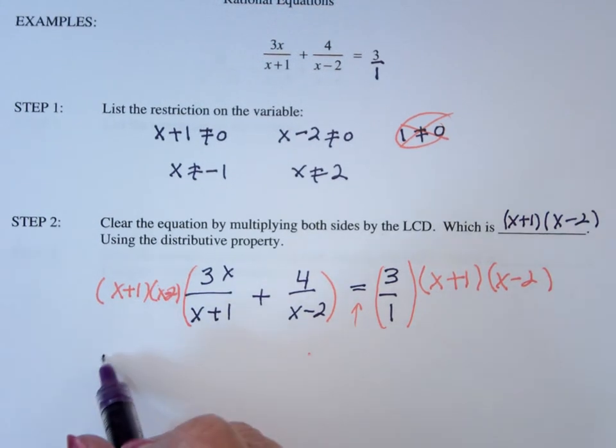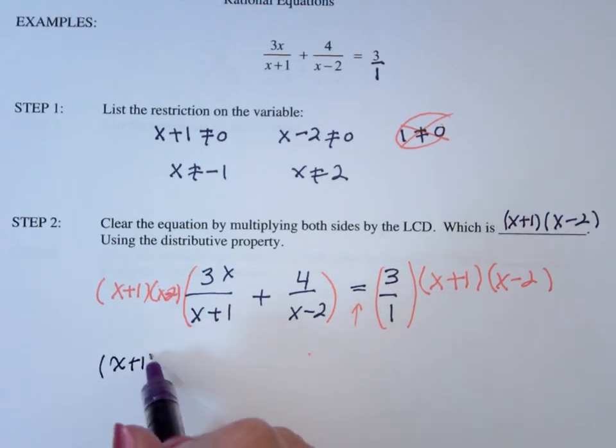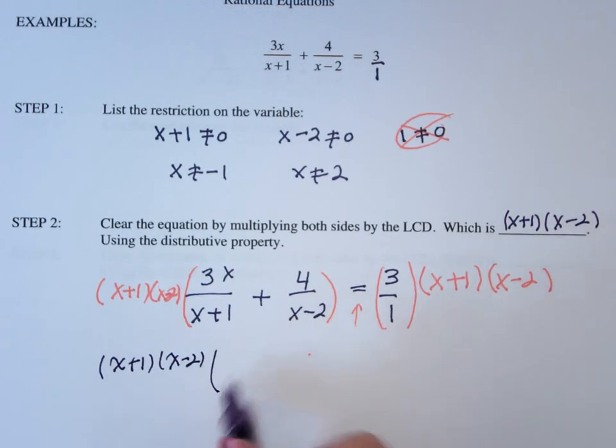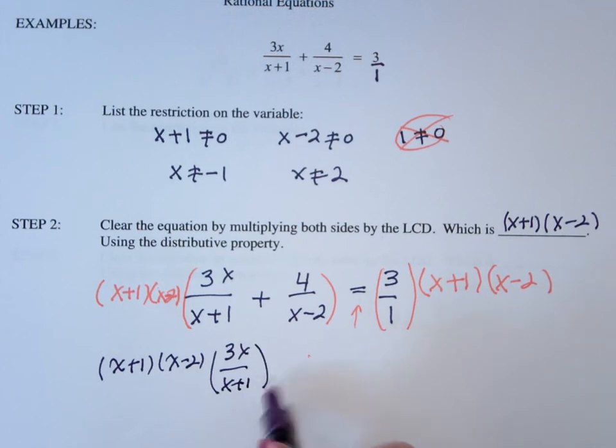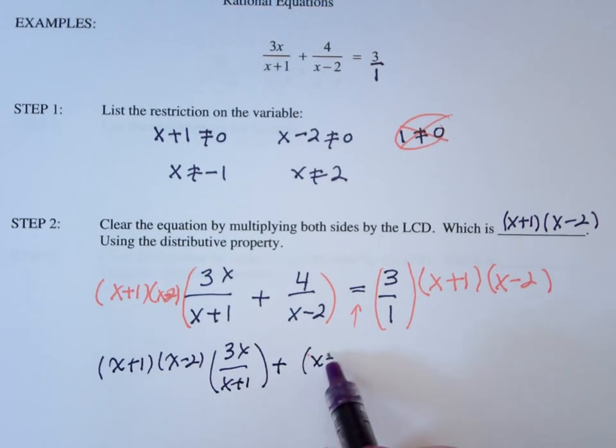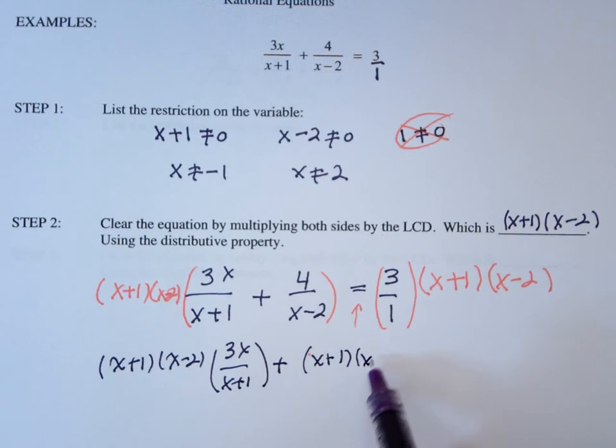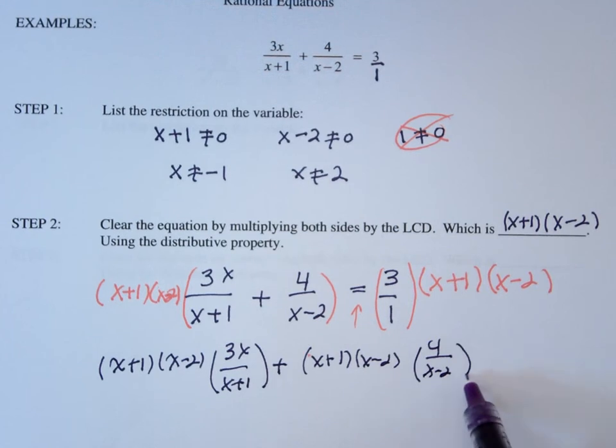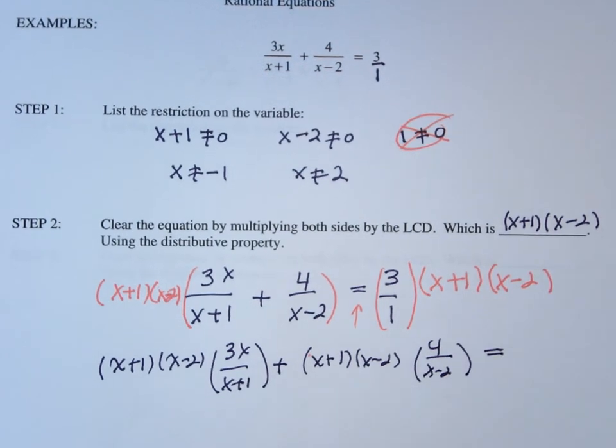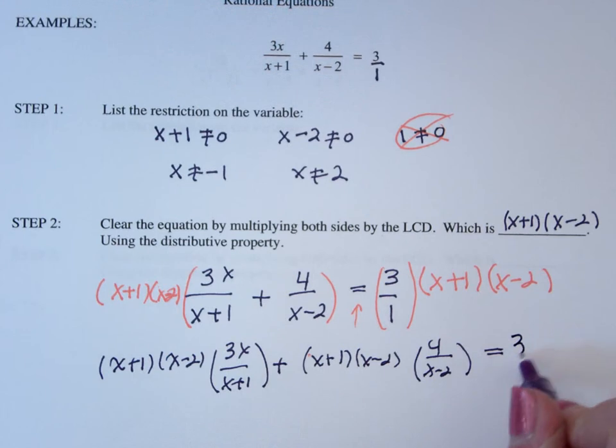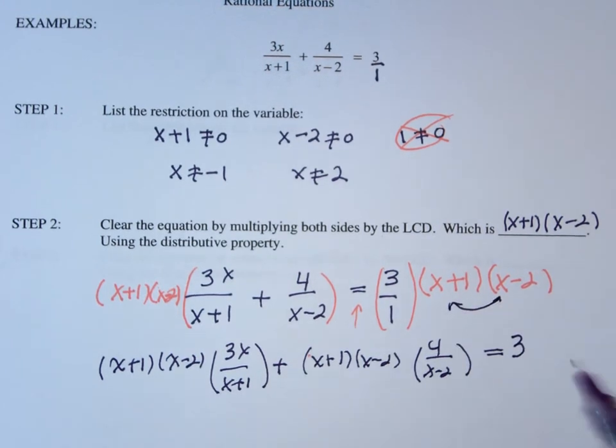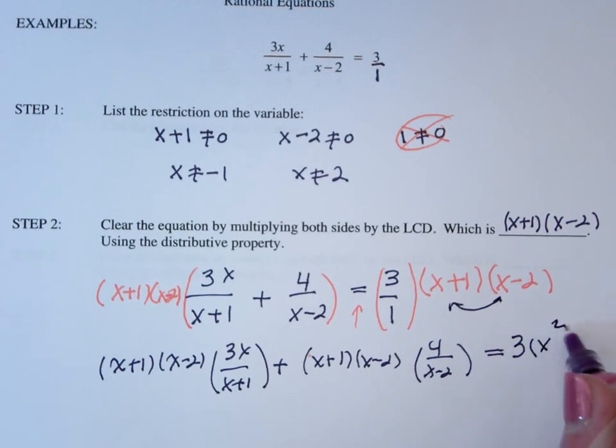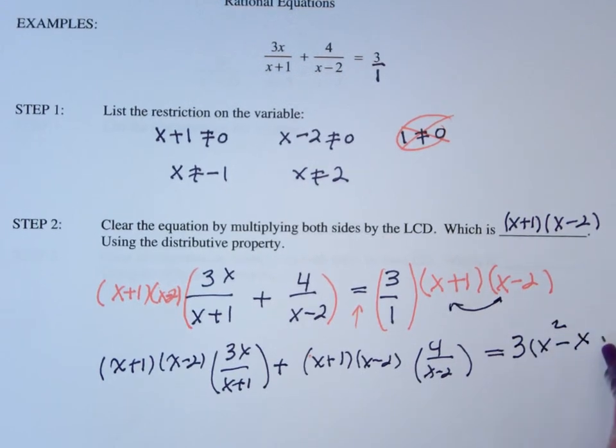Then you use the distributive property, x plus 1, x minus 2 times the first term. And then you're going to have 3 times x plus 1 times x minus 2. I'm going to multiply these two together, because nothing reduces out. So this is going to be x squared minus x minus 2.